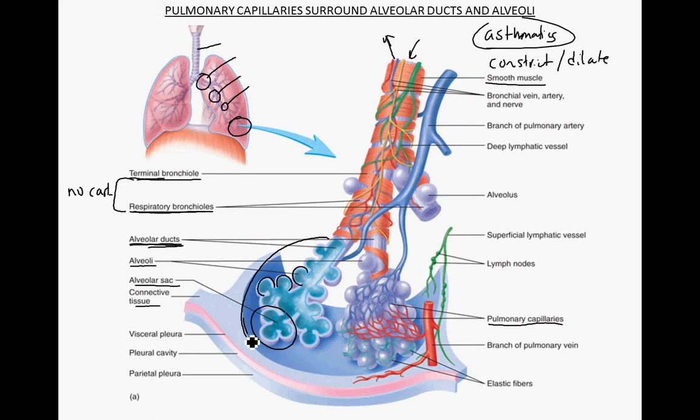Here the respiratory unit is shown sectioned longitudinally, and here it is whole, so you can see how the pulmonary capillaries are associated with it. The red indicates oxygenated blood and the blue indicates deoxygenated or carbon dioxide-rich blood. Blood flows through this capillary network, picks up oxygen, and moves back toward a branch of the pulmonary vein, returning blood to the left atrium.